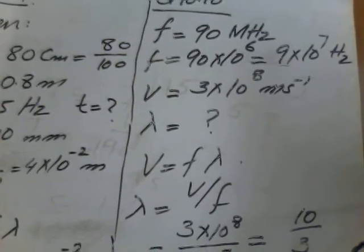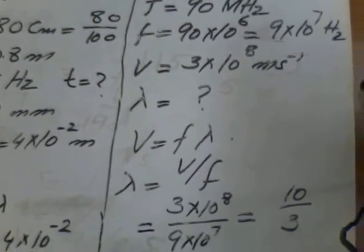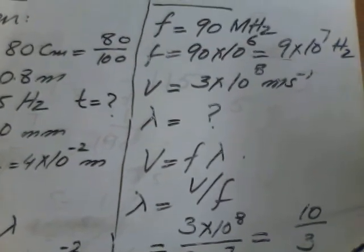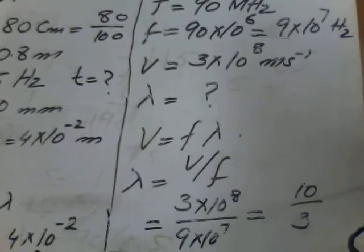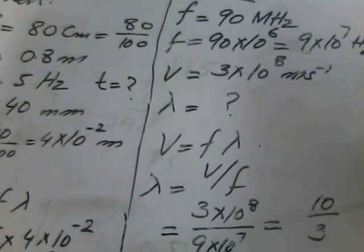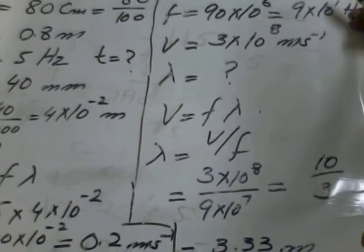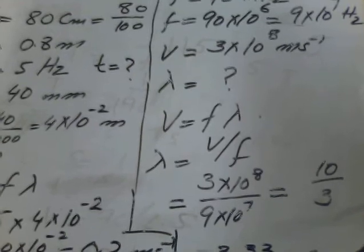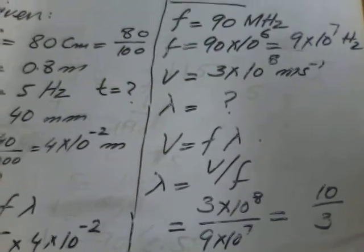V is equal to f lambda, you are very familiar with this formula. After rearranging this equation to find the wavelength, lambda is equal to V over f. While we put the values...